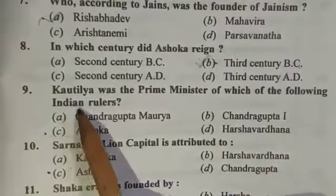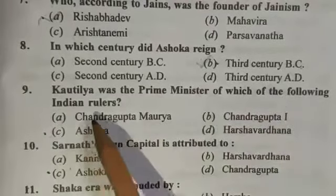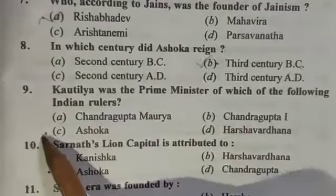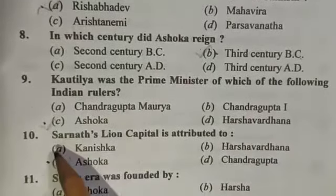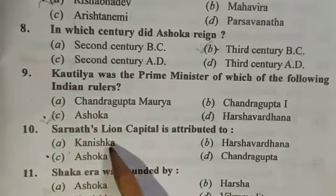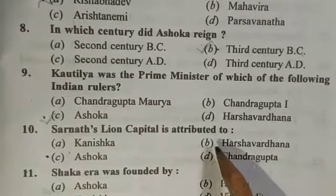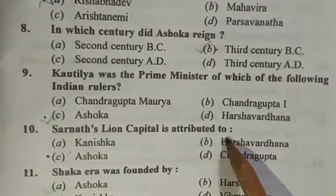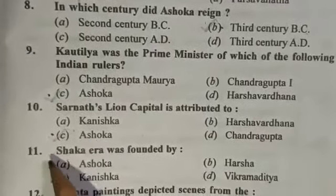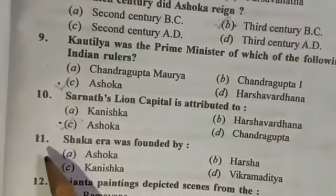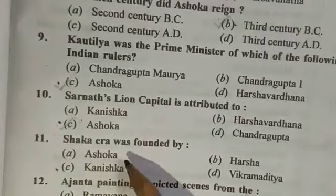Question 9: Kautilya was the prime minister of which of the following Indian rulers? The answer is Ashoka. Question 10: The capital is attributed to Ashoka. Question 11: Shaka era was founded by — the answer is Kanishka.